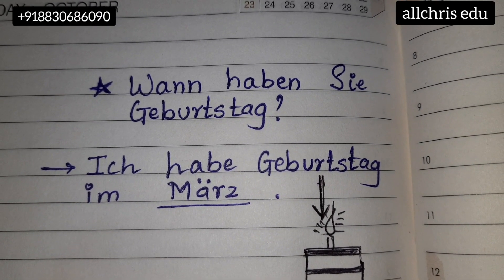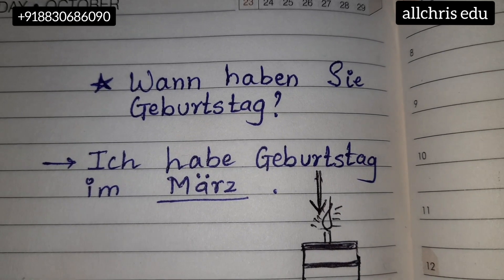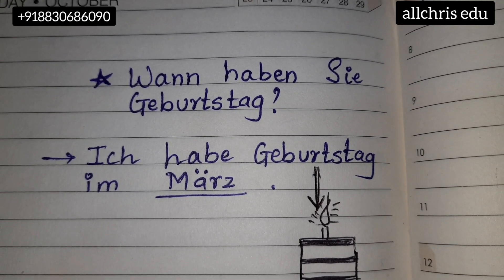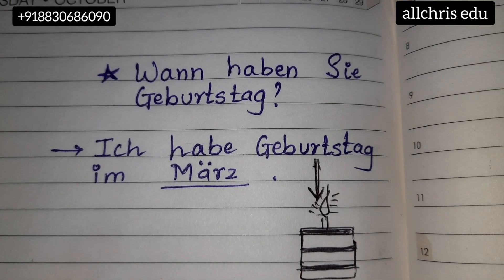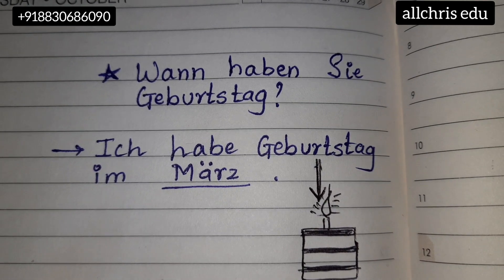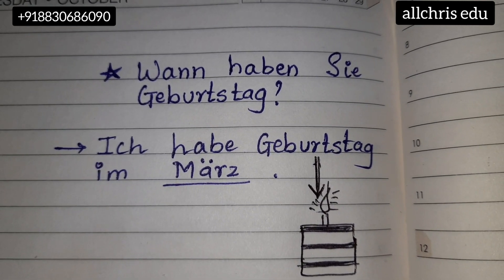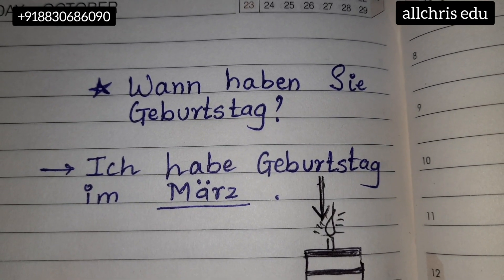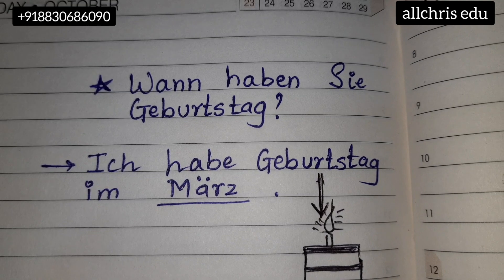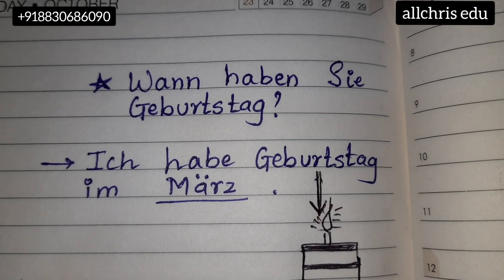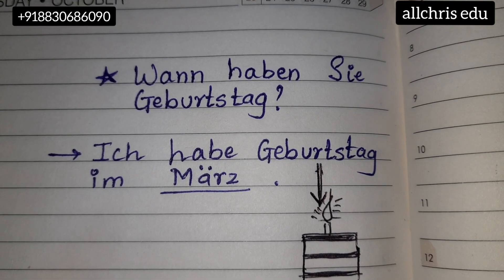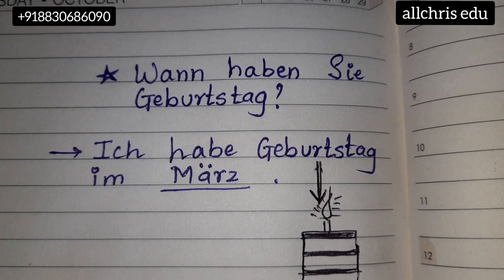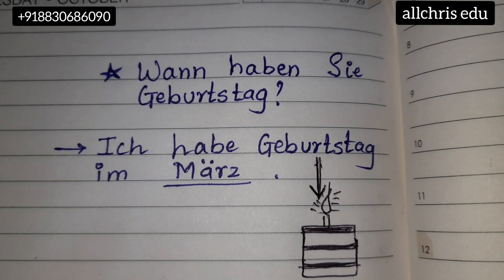'Im' means 'in.' Whichever month you have your birthday, you can say it in German. So for example: Ich habe Geburtstag im März — meaning my birthday is in March. According to your birthday, if you want to tell your real birthday or an imaginary birthday, be prepared for that.